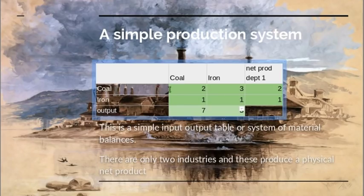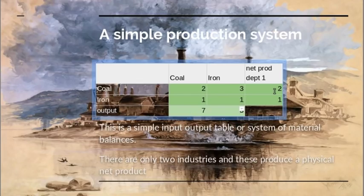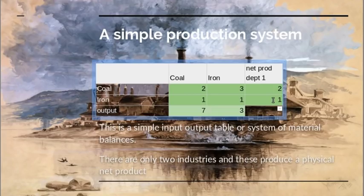If we look across the coal row, we see that a total of five units are used — two in the coal industry itself and three in the iron industry. Since the coal industry produced seven units, that means there's a net output of two units. If we do the same thing for the iron industry, we find that there's a gross output of three units and if we take away the two that are used, there's a net output of one. So there are only two industries and they're producing a physical net product, or a physical surplus.